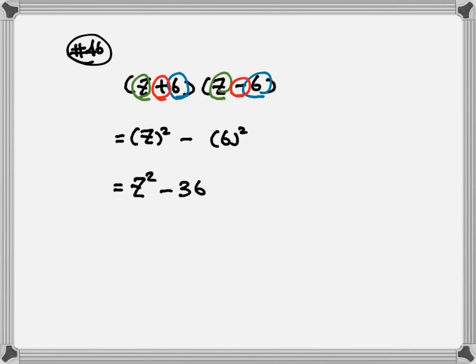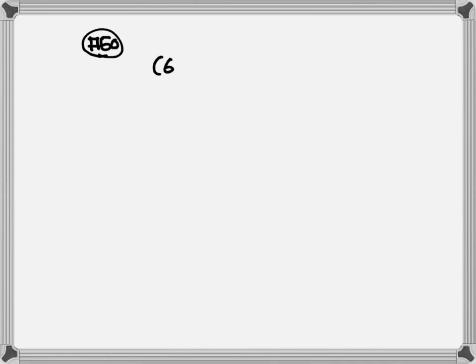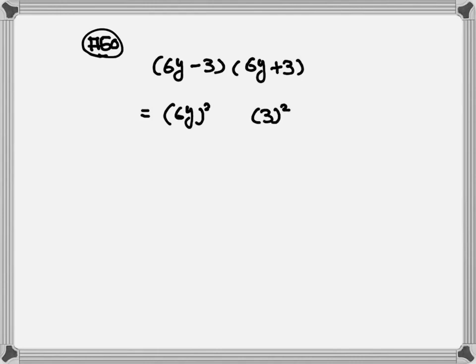This is much easier. Now let's look at number 50. We have 6Y minus 3 times 6Y plus 3. Again, the numbers inside the parentheses are exactly the same — both have 6Y and 3 — one is plus, one is minus. So we can use the difference of two squares formula. Just square the first number, square the last number, and put a minus in between. 6Y squared becomes 36Y squared, keep the minus, 3 squared is 9.